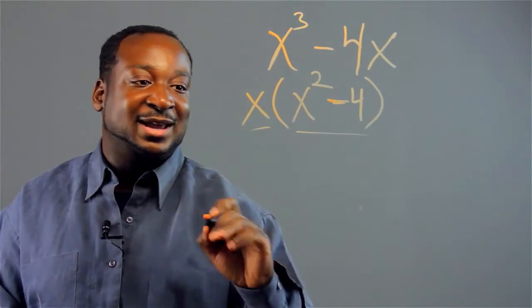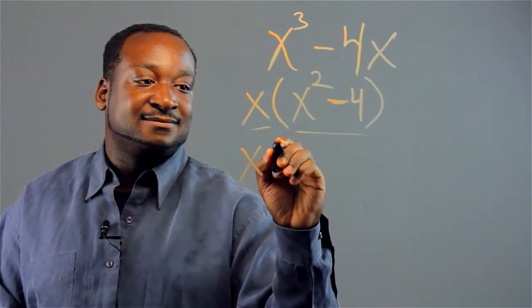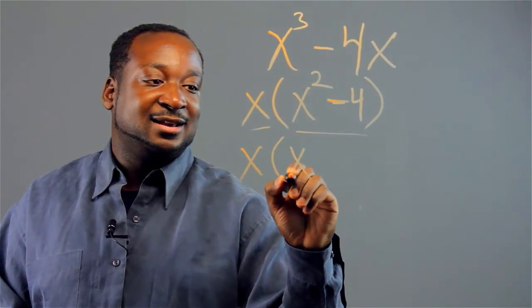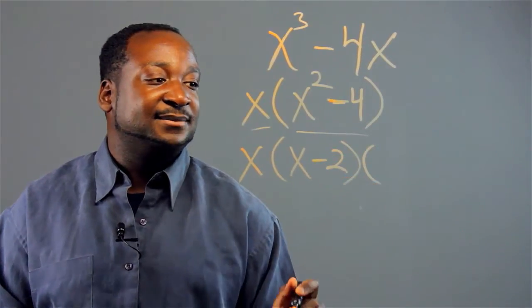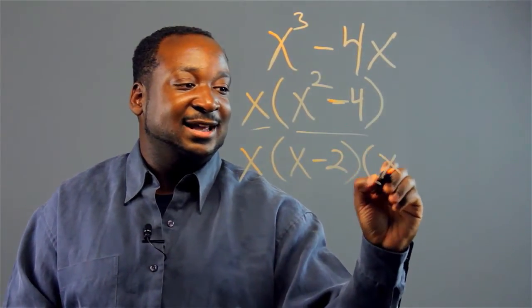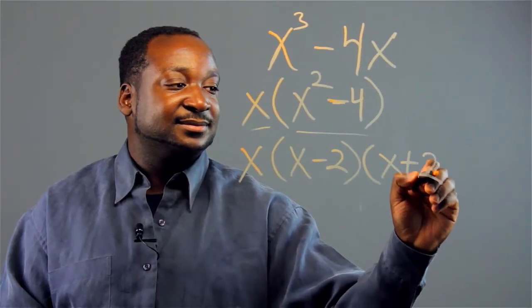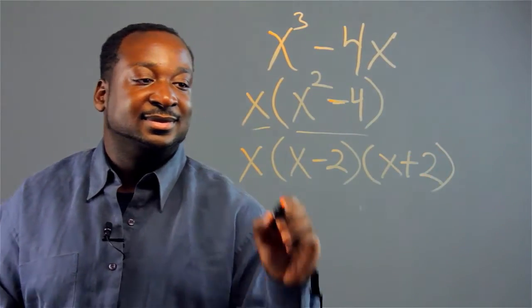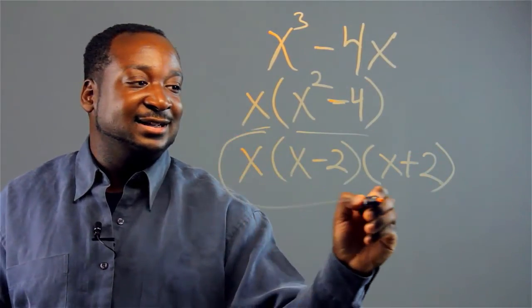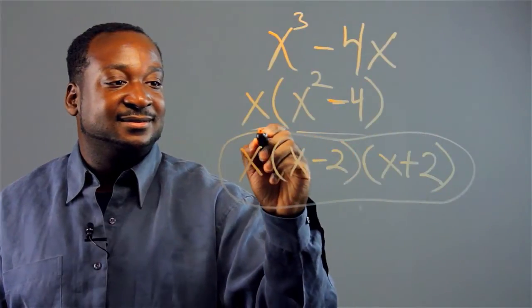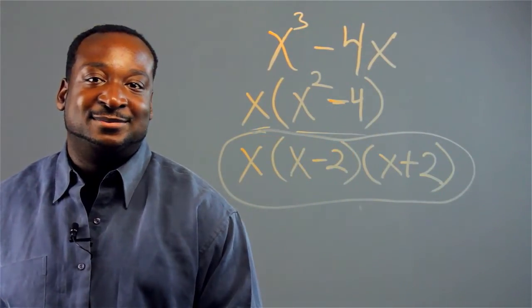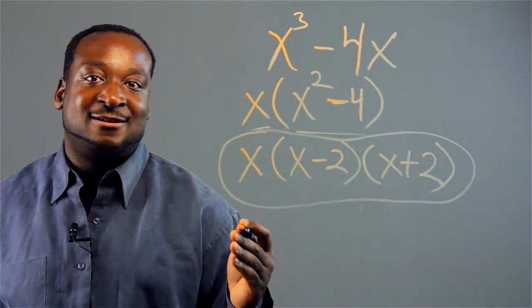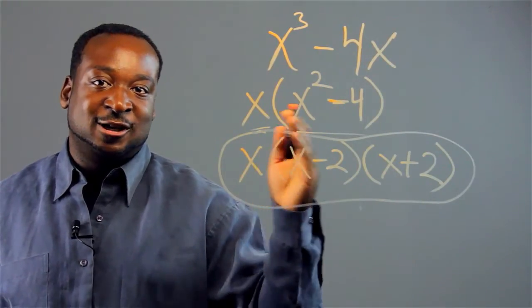So I could factor this some more and get x minus 2 and x plus 2. And there's our answer. That's our example of how to factor problems to the third power.